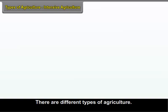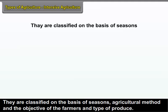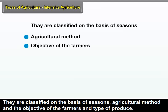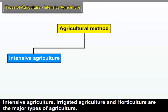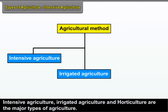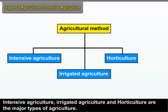There are different types of agriculture. They are classified on the basis of seasons, agricultural method, the objective of the farmers, and type of produce. Intensive agriculture, irrigated agriculture, and horticulture are the major types of agriculture.